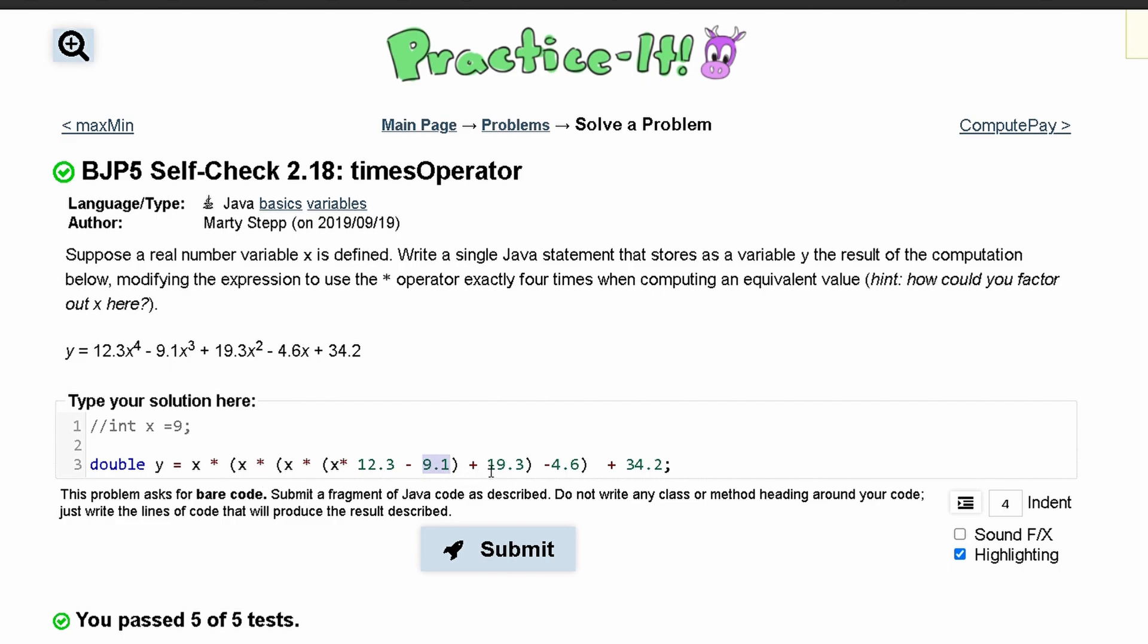Then outside of that we have 19.3, so these x's will be factored into our 19.3 giving us x squared. Outside of this, since negative 4.6 only has one x, we use parentheses to close it off and we have this x which will be factored into it, so we'll get negative 4.6x, and then lastly we have 34.2.